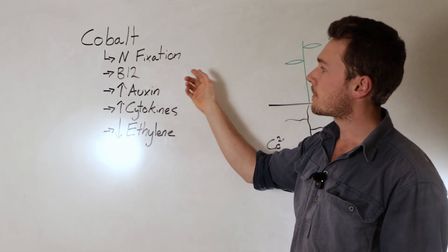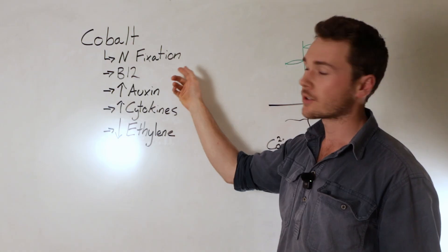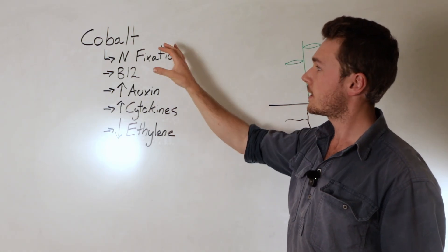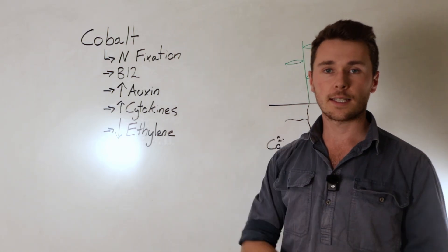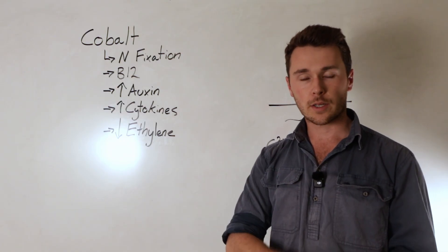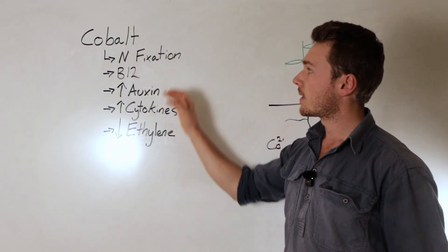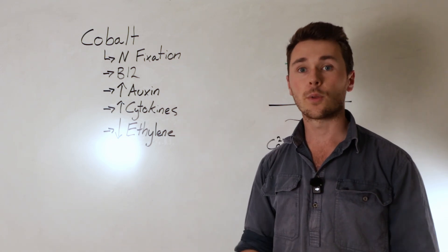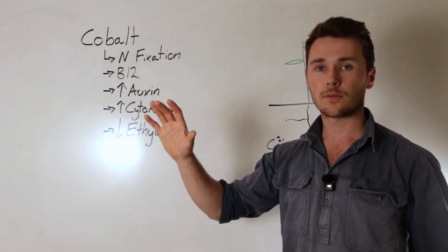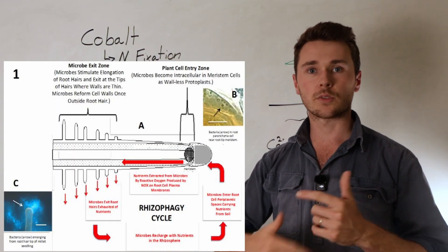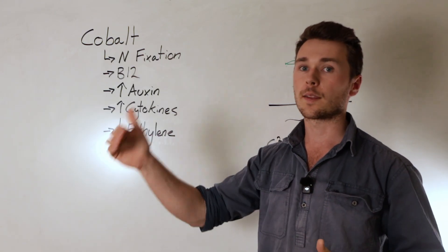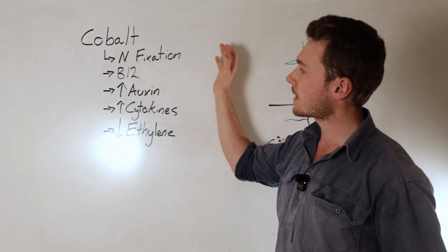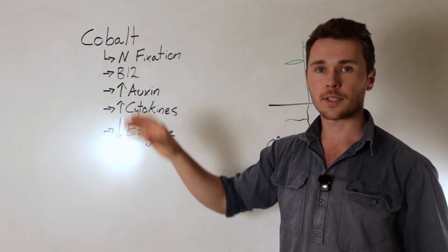So when we think about legume nutrition, I think cobalt is massive and we need to start paying attention to it, especially for trying to fix as much nitrogen ourselves as possible. But then secondly in every other crop that isn't a legume there is still microbes in the soil that fix nitrogen, and so cobalt is still required for those bacteria to then fix nitrogen outside of the plant. Then through the rhizophagy cycle through cycling, that can then supply the crop with nitrogen.